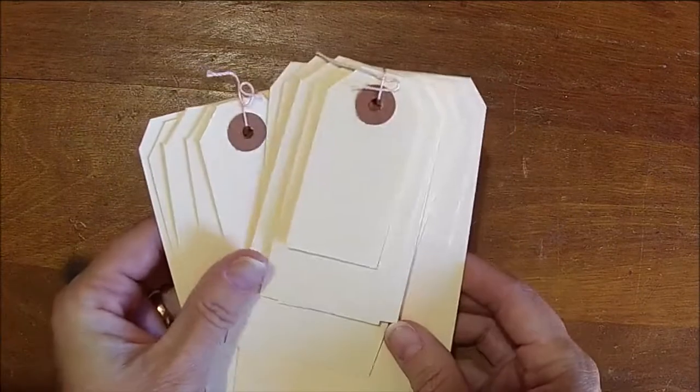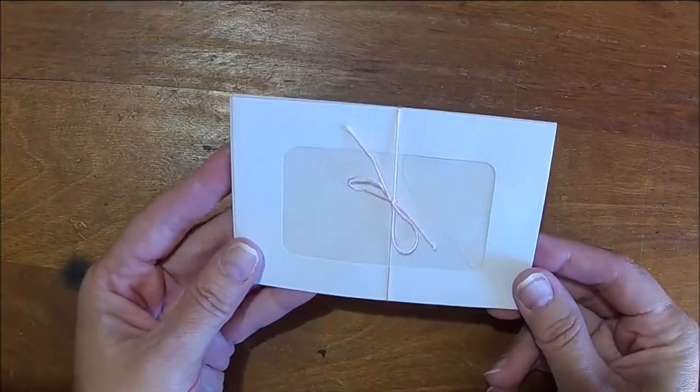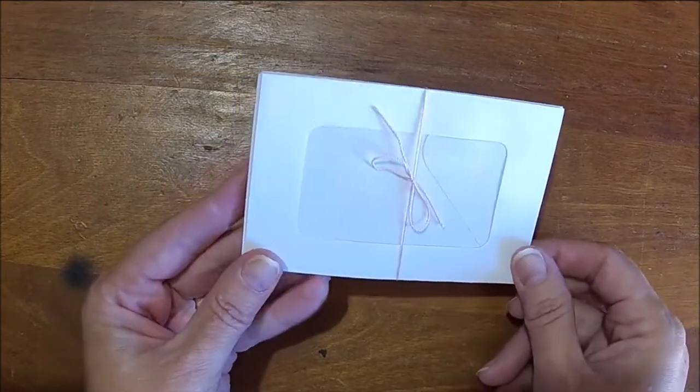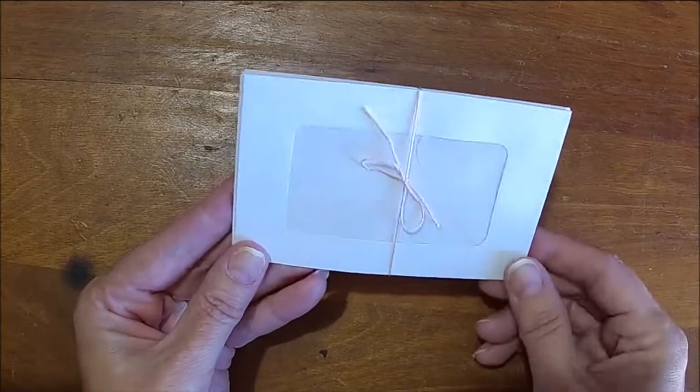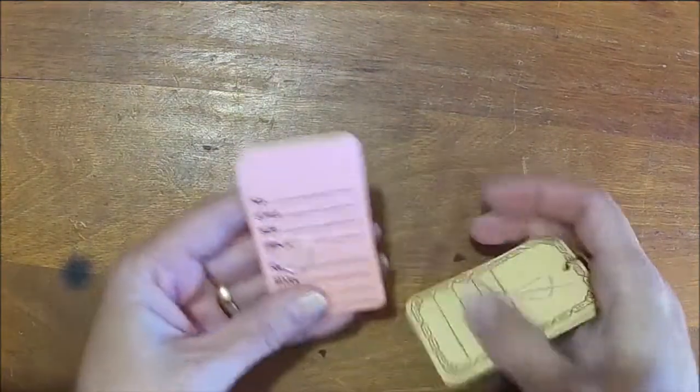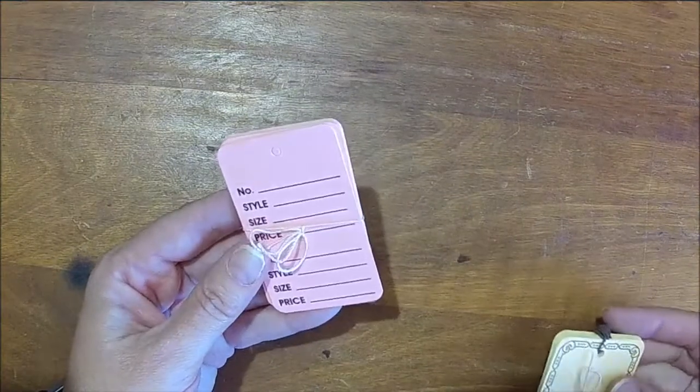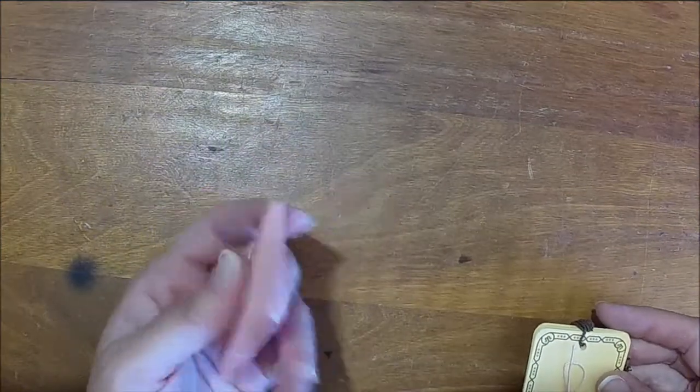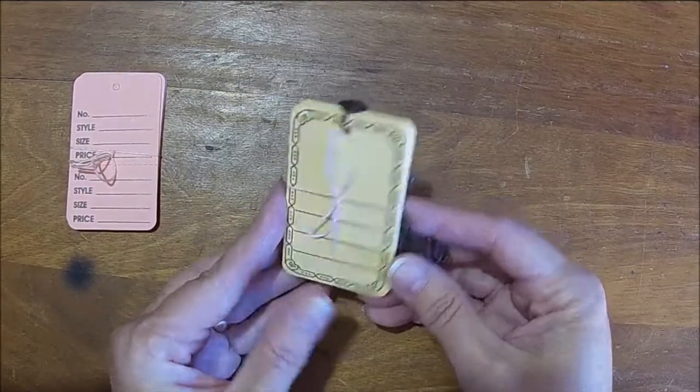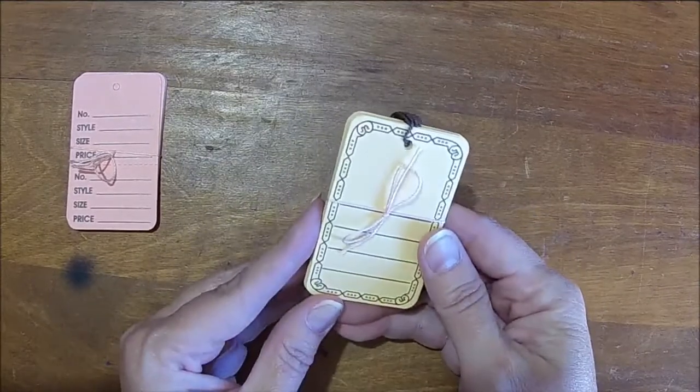Then I saw these and I thought these would really be fun. They have an opening right here with cellophane, and you can put a little picture, you can decorate it, whatever you want to do. And then I got two colors of merchandise tags—I got this pink one, plain on the back. I'll probably coffee dye some of these. And then this kind of yellow one, which I really like, and they're the same on the front and the back.